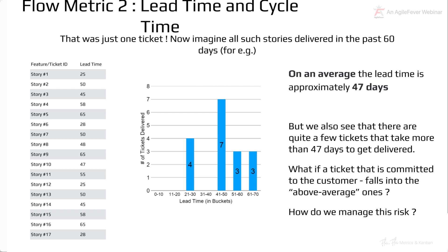But there are a lot of tickets that take more than 47 days to get delivered — you can see about six tickets here that exceed the average. What if the ticket you commit to the customer falls into that above-average group? What if you're unlucky and your ticket takes much longer than your average ticket?